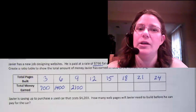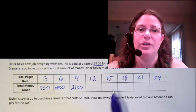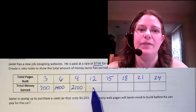So that's how we create a table using equivalent ratios. You can see that a table is a useful way of answering questions based on equivalent ratios. In the problem, we used the table to answer the question, how many web pages does Javier need to build?